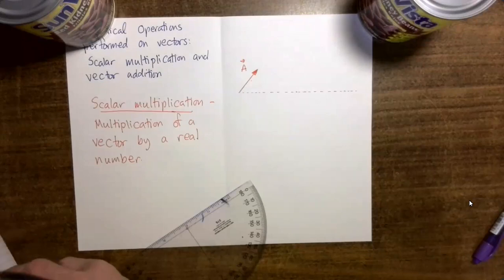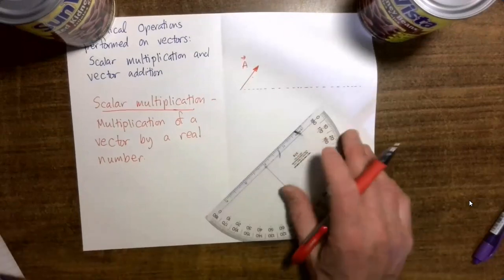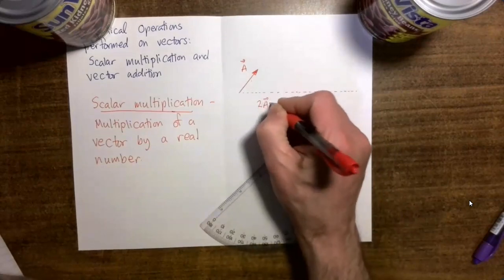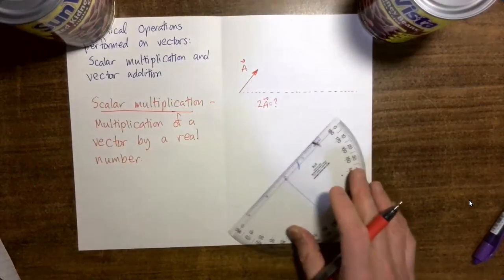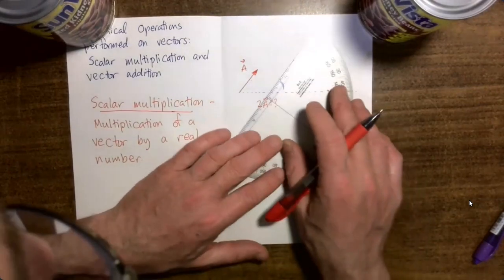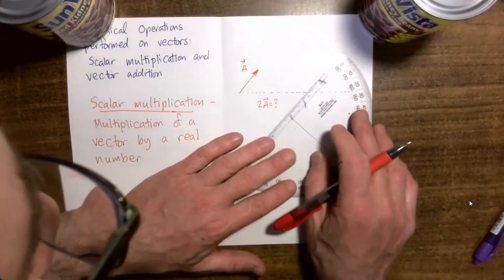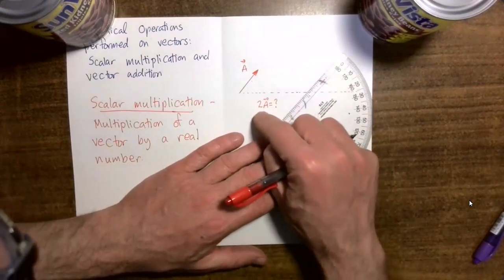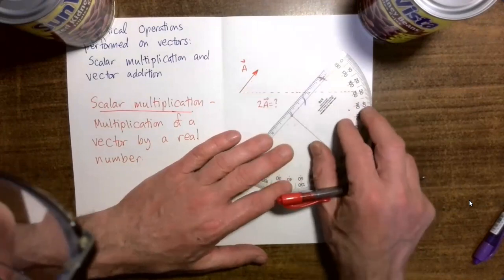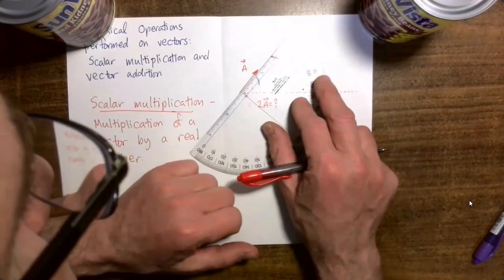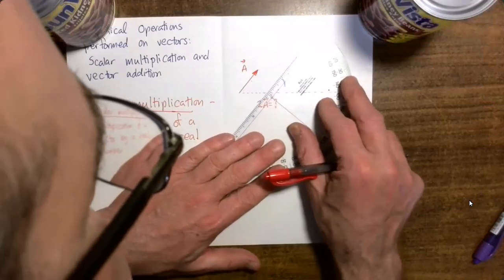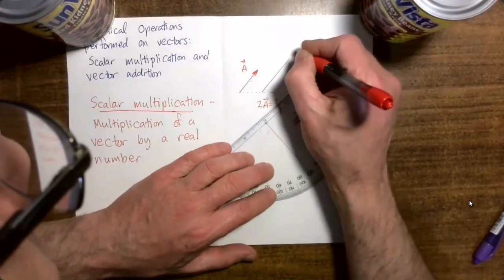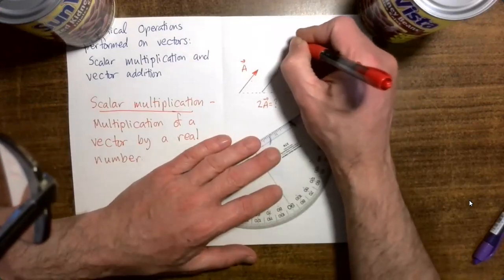If you think you can take a shot at it, you can pause the video and try to draw vector 2 times a yourself. Vector 2 times a would be twice as long as vector a, but pointing in the same direction. So here's vector a, and here's vector 2 times a.